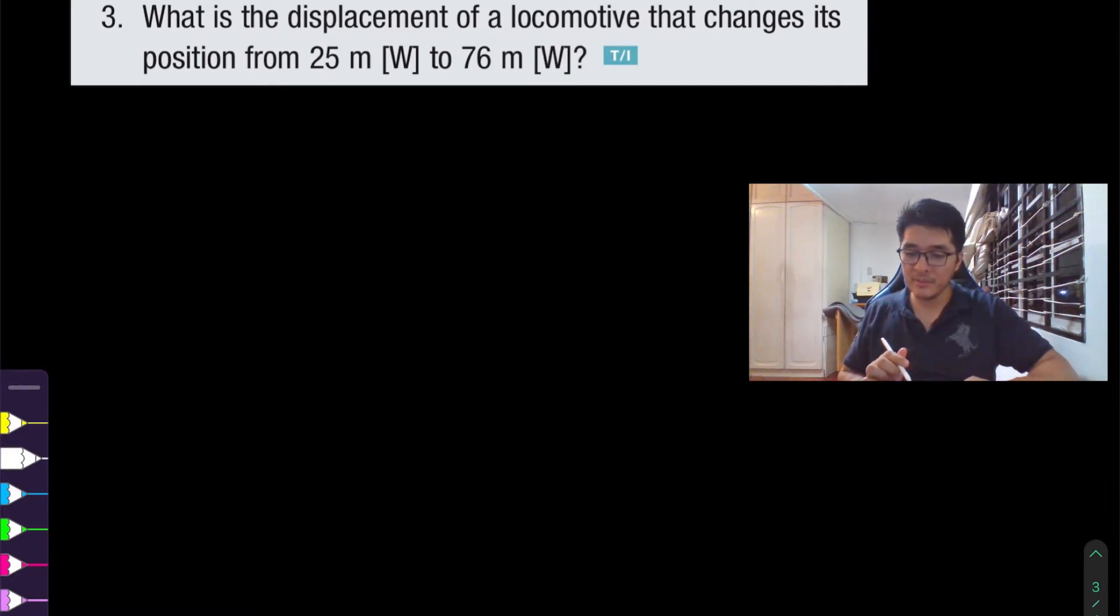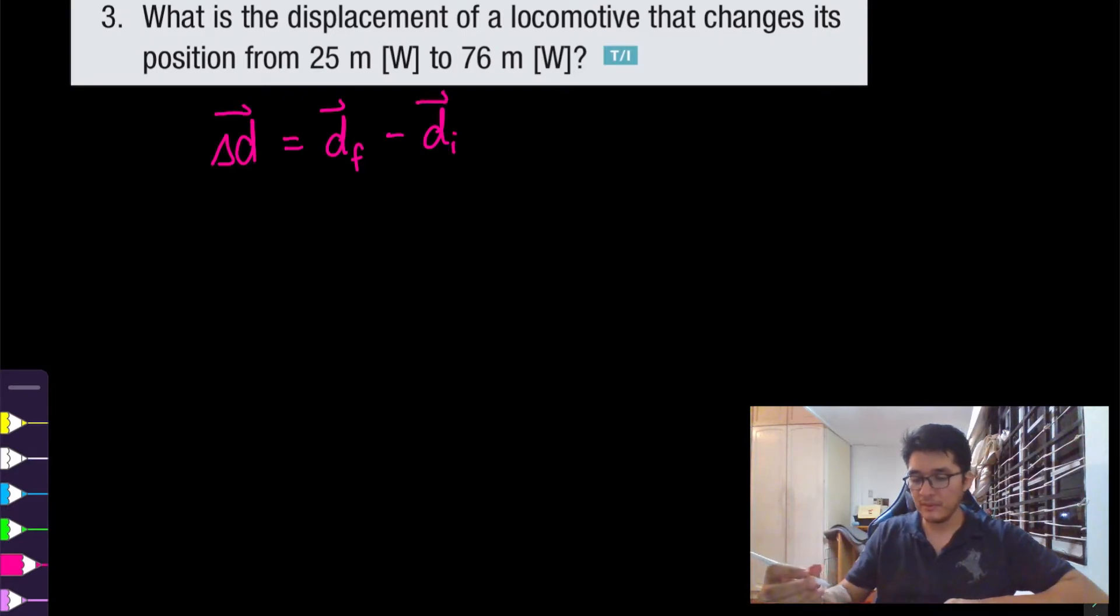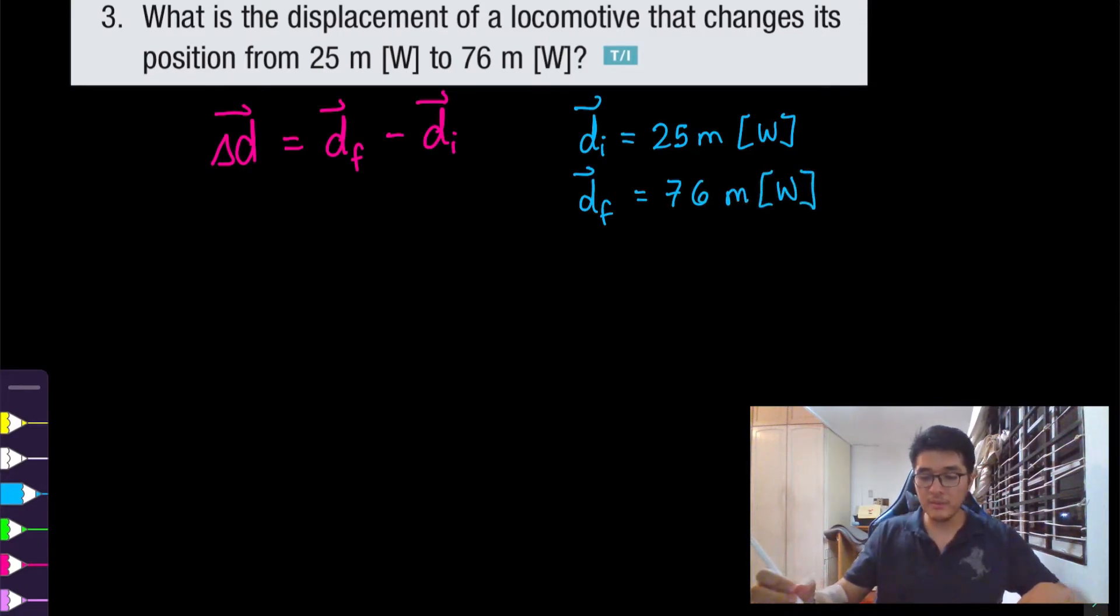Now for question three, we have: what is the displacement of a locomotive—locomotive is just a car—that changes its position from 25 meters west to 76 meters west? Here we have to recall the formula for displacement. We are dealing with the vector quantity for displacement, which is the change in position. So the final position vector minus initial position vector. In the question here we can identify the given quantities. It says that this locomotive changes its position from—so that would be the initial position—25 meters west to—so that will be the final position—76 meters west.